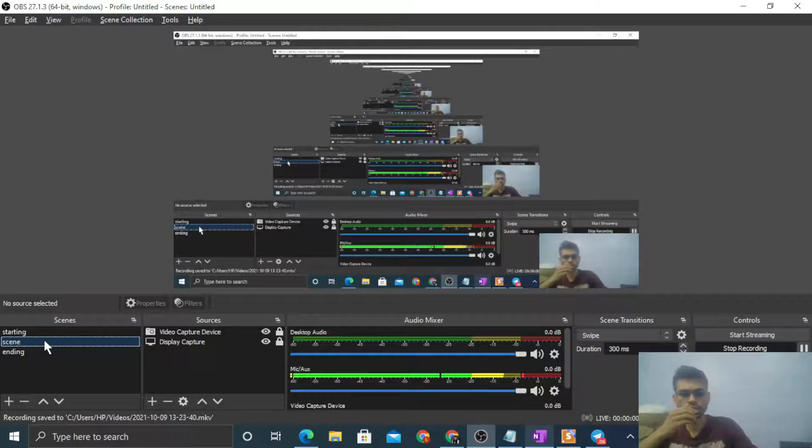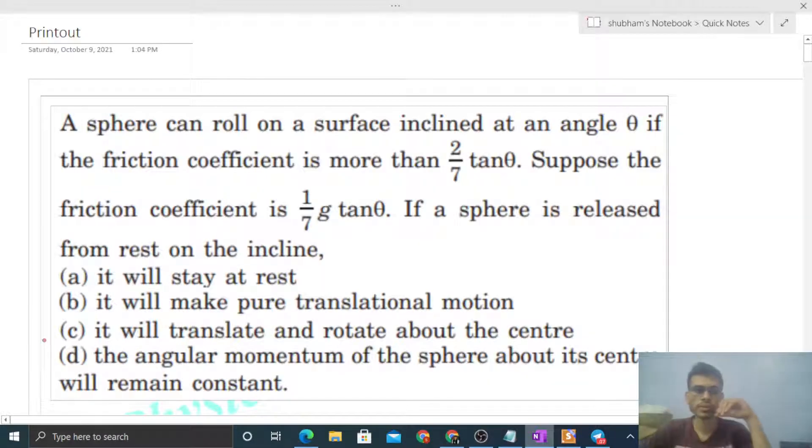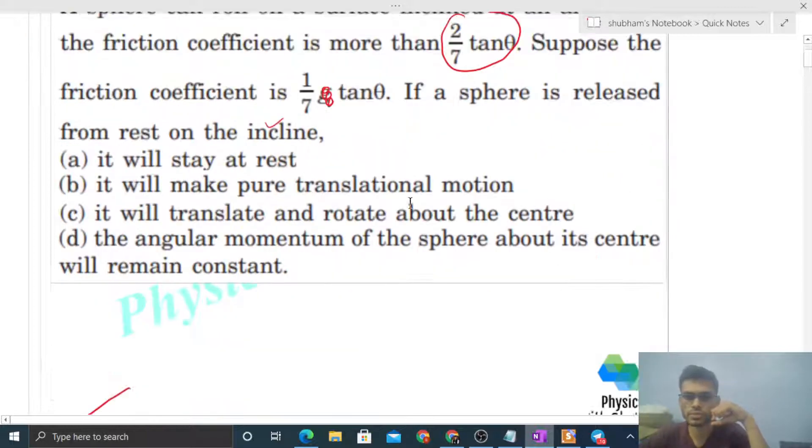Okay, hi everyone. Today let's discuss this interesting problem. It says a sphere can roll on a surface inclined at an angle theta if the friction coefficient is more than 2/7 tan theta. Suppose the friction coefficient is 1/7 of tan theta. If a sphere is released from rest on the incline, find...